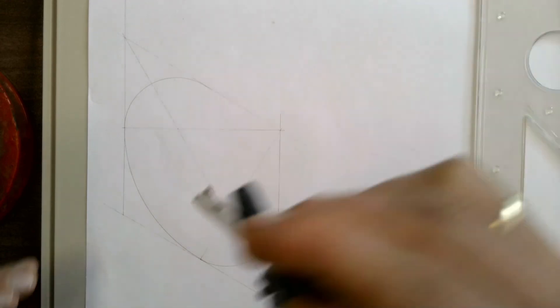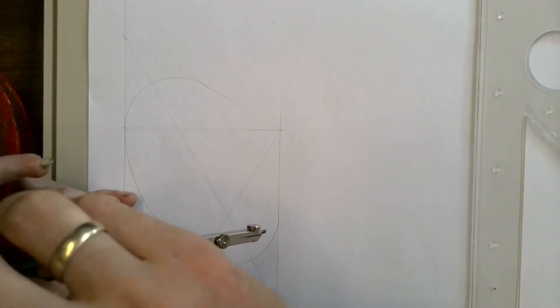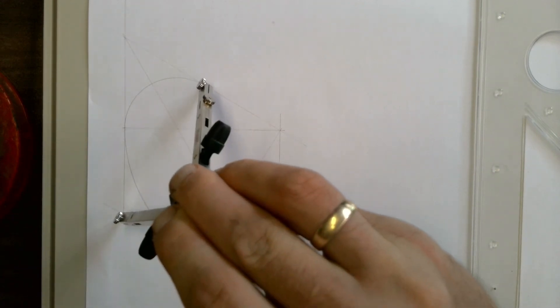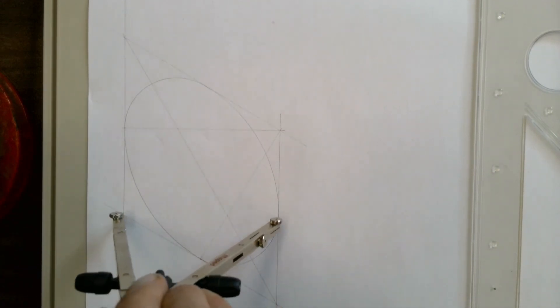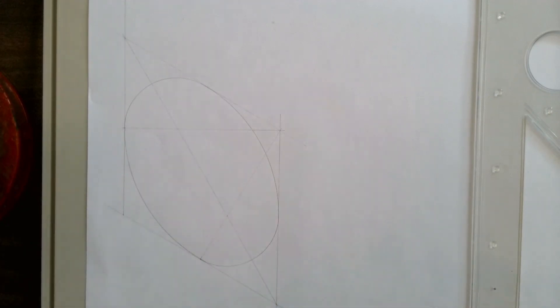Now repeat on the other side using the other obtuse corner of your square. And you've completed your isometric circle.